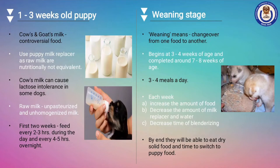1–3 week old puppy: Normally at this age, they are completely dependent on their mother's milk and do not need any other kind of food. But sometimes abandoned or orphan puppies need special care. Sources of milk we have are raw milk of cow and goat, and puppy milk replacer. Cow's and goat's milk are not ideal for newborns because they contain too much protein compared to dog's milk, making newborns more likely to become lactose intolerant.